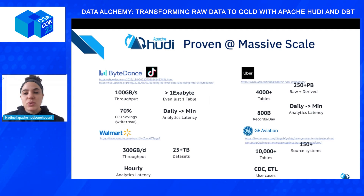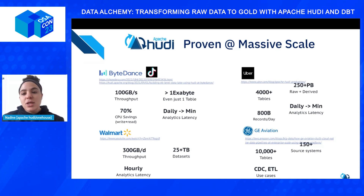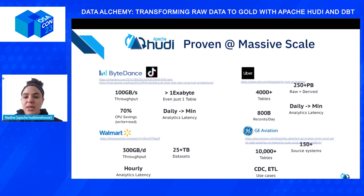Before we double-click into the incremental framework with the CDC feature, let's quickly cover how Hudi is being used with some major players. Hudi is proven at massive scale. Uber, Walmart, and GE all use Hudi for their mission-critical applications. At ByteDance, Hudi is being used at exabyte scale for a single table, and even at this level, Hudi brings down analytics from days to minutes. One of the ways Hudi achieves this is through its incremental processing framework.